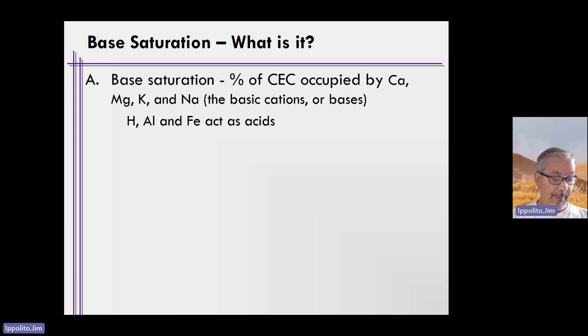When we determine CEC, we determine these four elements, or basic cations, and oftentimes pH as a function of the amount of hydrogen ions that are present. We also need to include the amount of aluminum and iron on the exchange sites if we're talking about soils that have the potential to be acidic or very acidic, even slightly acidic.